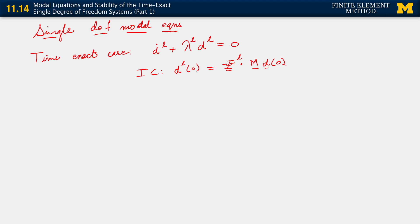Is obtained as ψ_l dotted with M d at 0. And just for convention, let's call this quantity ψ_l dotted with M d_0. And let's call this quantity d_0,l. That's the initial condition.